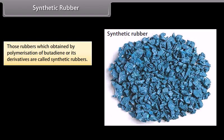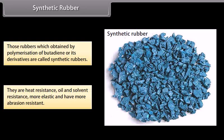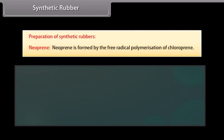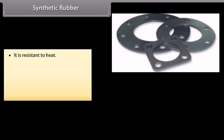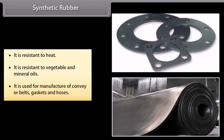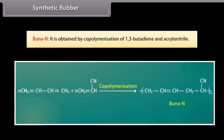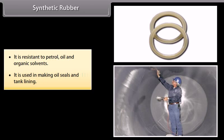Synthetic rubbers are obtained by polymerization of butadiene or its derivatives. They are heat resistant, oil and solvent resistant, more elastic and have more abrasion resistance. Neoprene is formed by free radical polymerization of chloroprene; it is resistant to heat and to vegetable and mineral oils, and is used for manufacture of conveyor belts, gaskets and hoses. Buna N is obtained by co-polymerization of 1,3-butadiene and acrylonitrile; it is resistant to petrol, oil and organic solvents, and is used for making oil seals and tank lining.